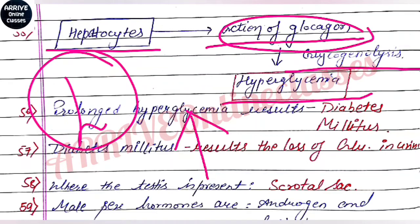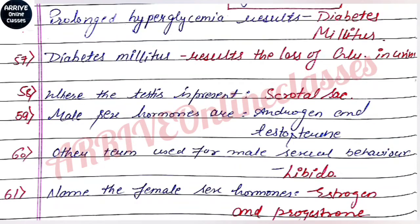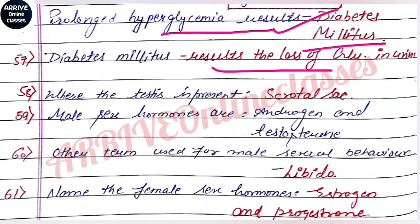Prolonged hyperglycemia results in Diabetes Mellitus. In this condition, the maximum glucose is lost through urine — this is the main feature of Diabetes Mellitus.